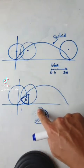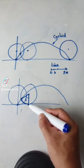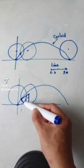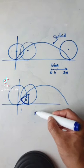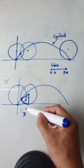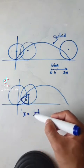So this distance from here to here is the same as this distance here, which is rt. So the x location at this point here would be rt, take away...